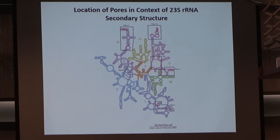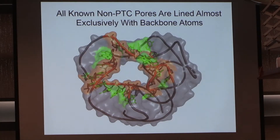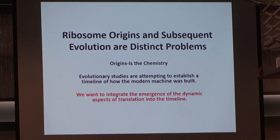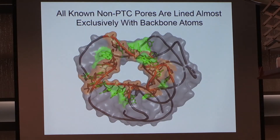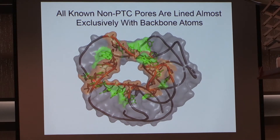This here is the PTC pore, and this is the L1 protein which is involved in the E-site and the expulsion of the spent tRNA. There are multiple pores, and when you look at them up close, all the pores look similar. The pore has bases colored in green and backbone atoms in a brown or orange color. What you see is the pore is almost completely lined with the backbone atoms — it's the backbone atoms that are lining the pore.